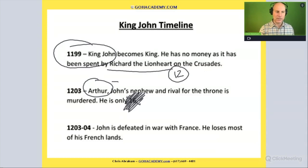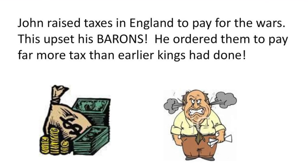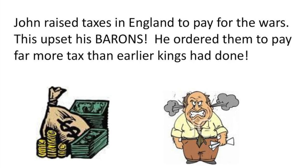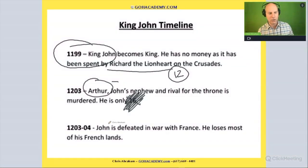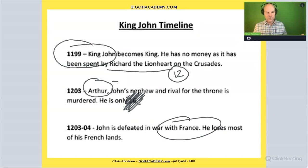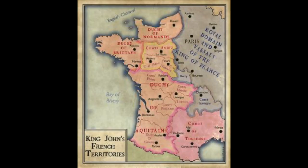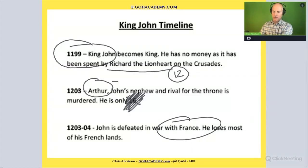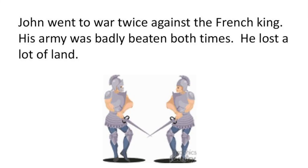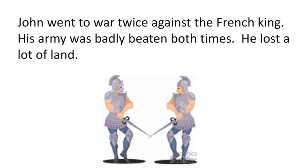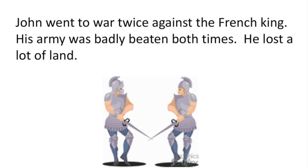He's taxing like crazy during this time — taxing to pay for wars and battles. He goes to war with France and loses. It's a major defeat, and England loses massive amounts of land. So he taxed the common folk, the barons, the knights — and still lost the war. He was really disliked at this point.